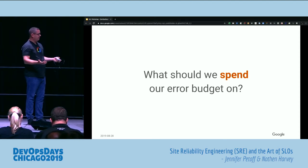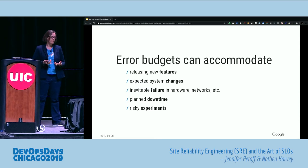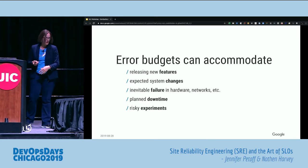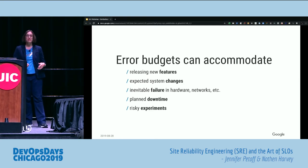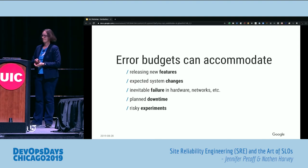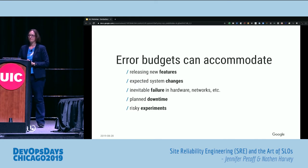What if you have a lot of budget left? Error budgets can accommodate a bunch of different things: releasing new features, dealing with expected system changes, inevitable failure — think Murphy's Law, we already talked about 100% never being the right target. Planned downtime, or even risky experiments you might want to try. Having budget left over is a signal that as an organization we aren't moving fast enough. Thinking back to the three ways — that third way is the feedback cycle. If we aren't moving fast enough, we aren't getting that feedback loop as tight as possible and we're potentially missing learning opportunities.